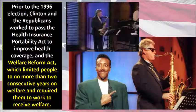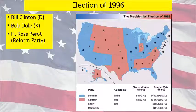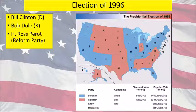They also passed the Welfare Reform Act, limiting people to no more than two consecutive years on welfare and requiring them to work to receive benefits. In 1996, Clinton ran against Bob Dole for the Republicans, with Ross Perot running for the Reform Party one more time.